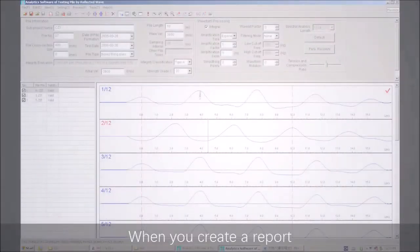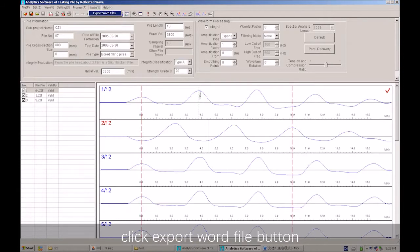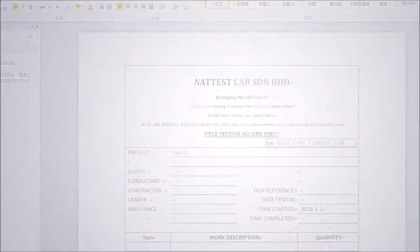Create a report: When you create a report, choose the IT files on the pile list area, click the truth button on the menu bar, click export Word file button, and then create a report and open it.